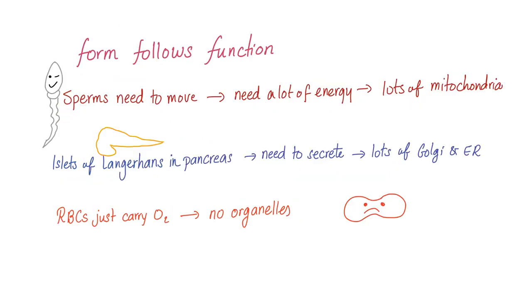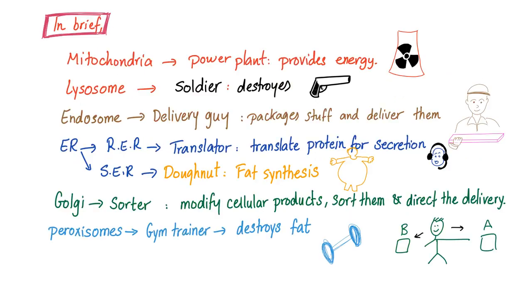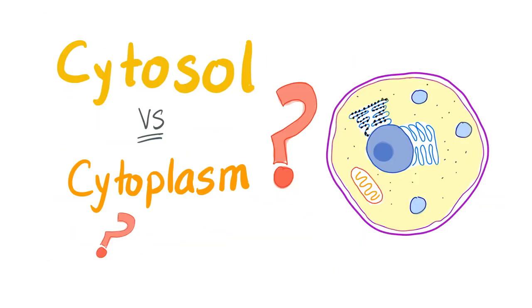Form follows function. For instance, sperm cells need to move, so they need lots of energy and will have lots of mitochondria. The islets of Langerhans in your pancreas need to secrete, so they need lots of Golgi apparatuses and endoplasmic reticula. Red blood cells just carry oxygen, so the mature red blood cell has no organelles. In brief: mitochondria is the powerhouse; lysosomes are the soldiers; endosomes are the delivery guys; rough endoplasmic reticulum is the translator, the Uber, and your CPU; smooth endoplasmic reticulum is the donut; Golgi is the sorter; and peroxisomes are your gym trainers.